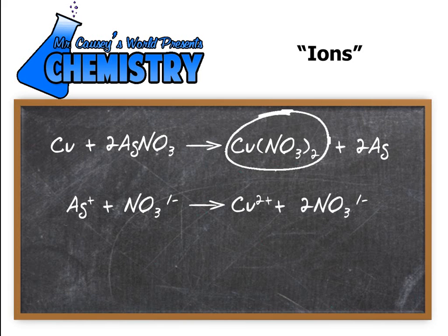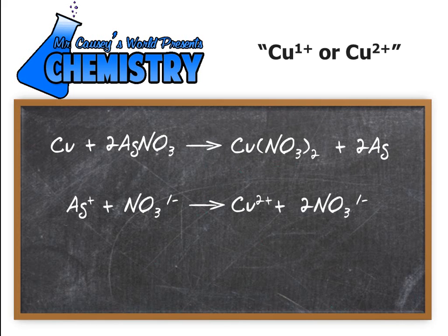Some would ask how I knew that it was copper 2 and not copper 1 because remember copper has 2 charges. It can be copper 1 or copper 2. It can have a plus 1 or a plus 2 charge. And I know because when I look over at the nitrate, there's 2 nitrates and a negative 1 and 2 times negative 1 is negative 2. Well, in order to make negative 2 balance, I have to have a plus 2 and that's how it works.